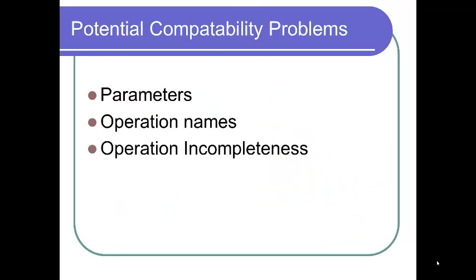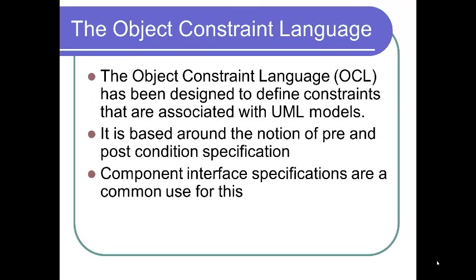There are some potential compatibility problems with components: parameter mismatches, operation name mismatches, and operation incompleteness. In each of these cases, you need to write something called an adapter to handle the situation. There is an example in the text showing an adapter to strip away the zip code from a complete address.